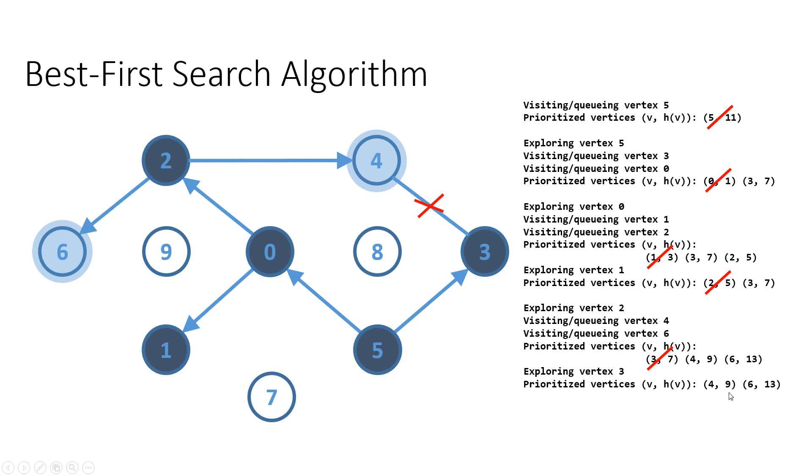Vertex four has priority nine, vertex six has priority 13. So nine is the lowest number, it's actually the highest priority. So vertex four will be the next to explore.